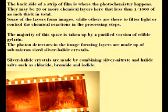The back side of a strip of film is where the photochemistry happens. There may be 20 or more chemical layers here that are less than 1/1,000th of an inch thick in total. Some of the layers form images, while others are there to filter light or control the chemical reactions in the processing steps.